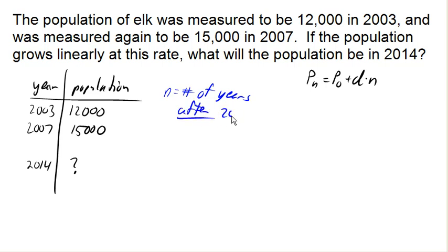And so we're going to add a new column here for n. So how many years after 2003 is 2003? It's 0 years after 2003. How many years after 2003 is 2007? It's 4 years later. And then 2014 would be...what's the difference there? 11 years.